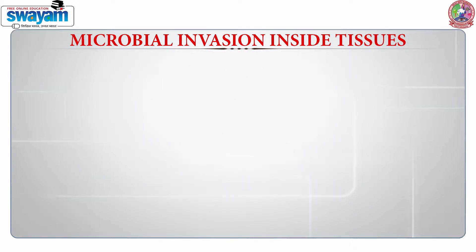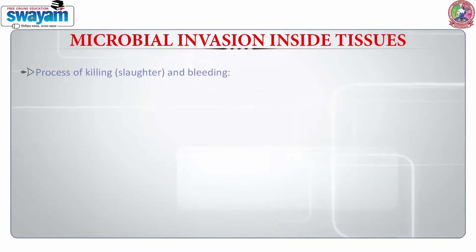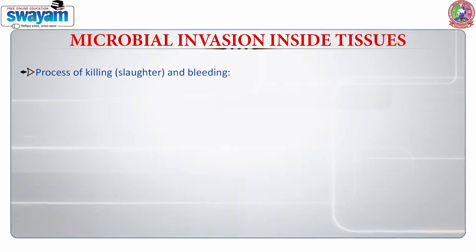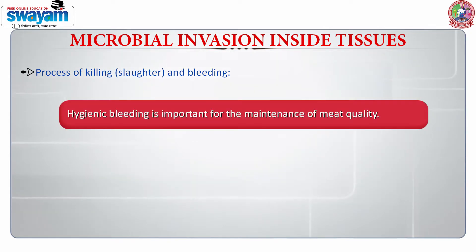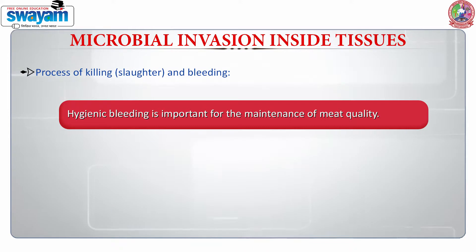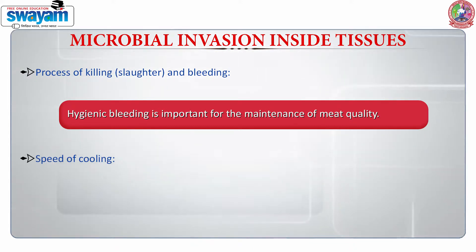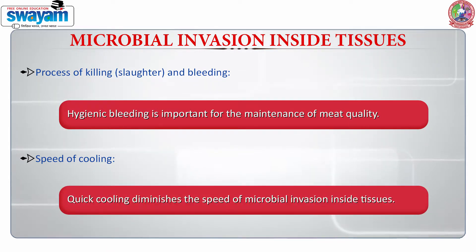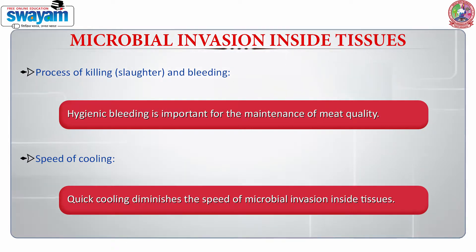When we talk about microbial invasion inside the tissue, it is again dependent upon whether hygienic bleeding is happening, as it will maintain the meat quality. The speed of cooling is also very important because if the cooling is quick, it will reduce the speed of microbial invasion inside the tissues.